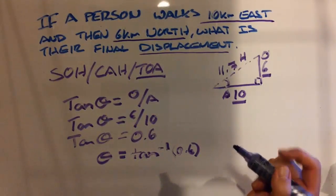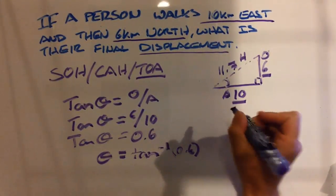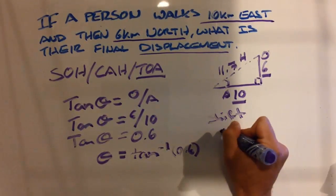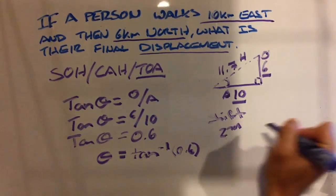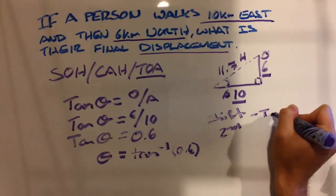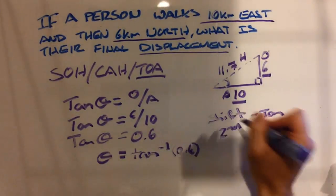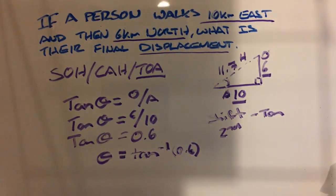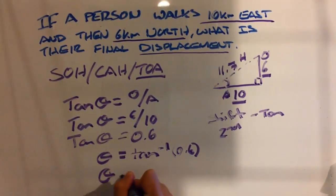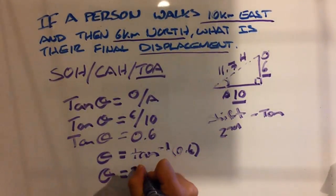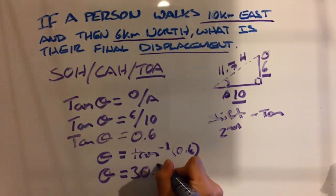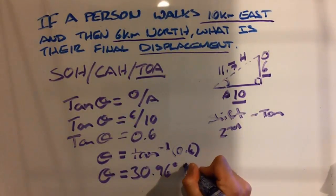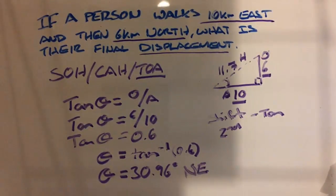To have the angle on its own, we need to remove the tan, so we apply the arctan — or on your calculator, tan to the negative 1. You might need to press Shift or Second Function and then tan to bring up the arctan. This gives us a final answer of 30.96 degrees, and we are traveling in a north-east direction.